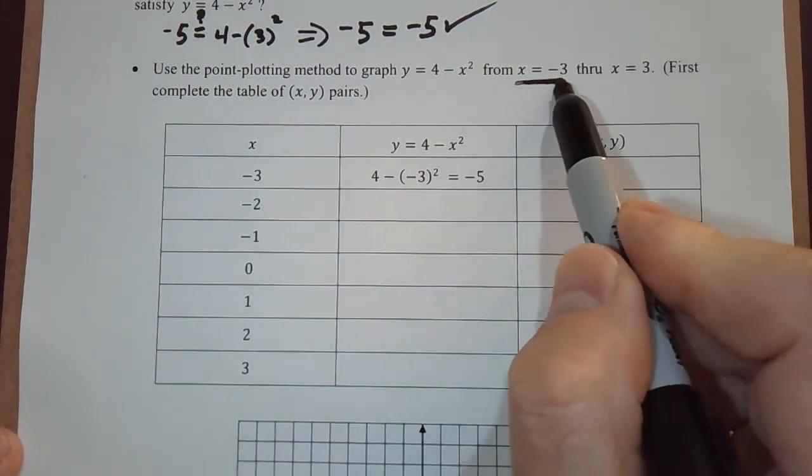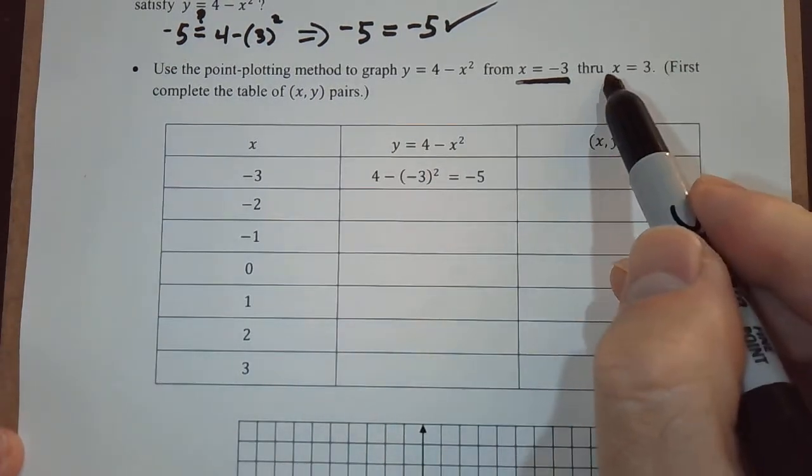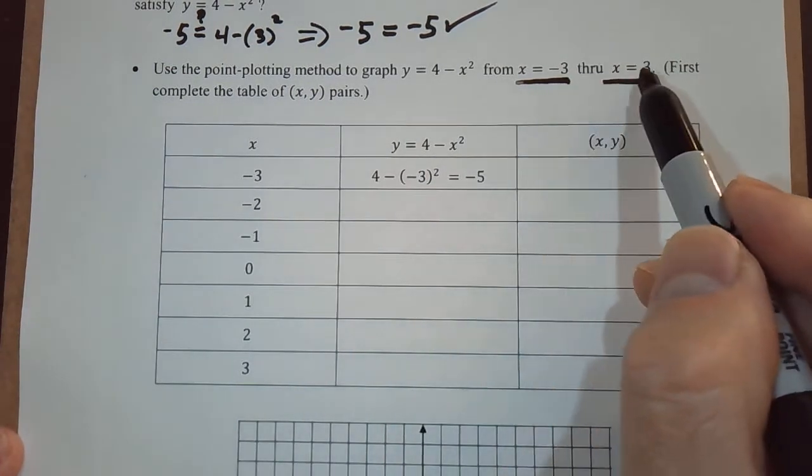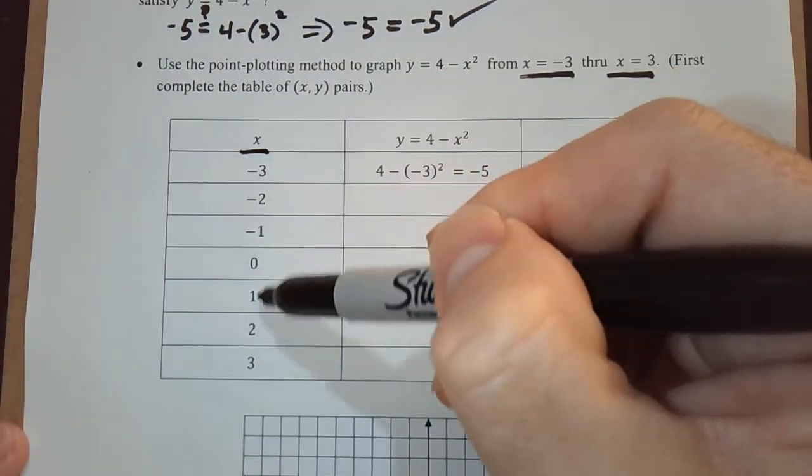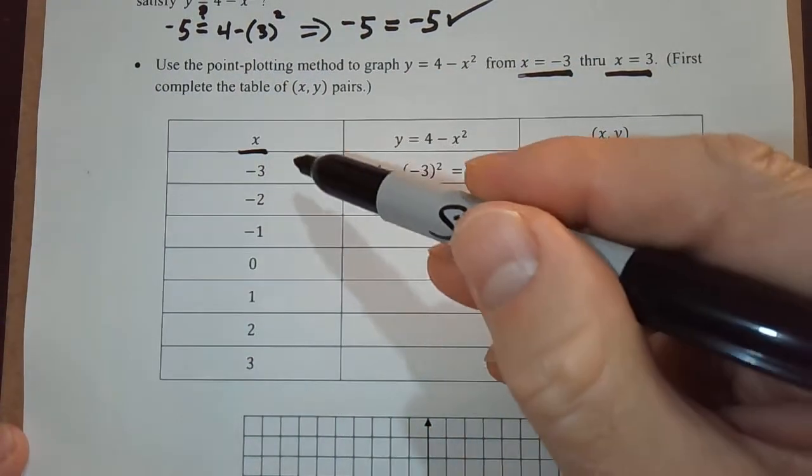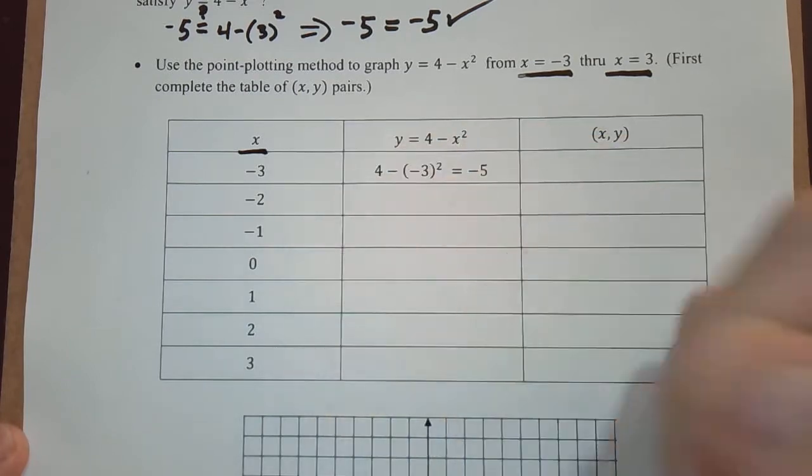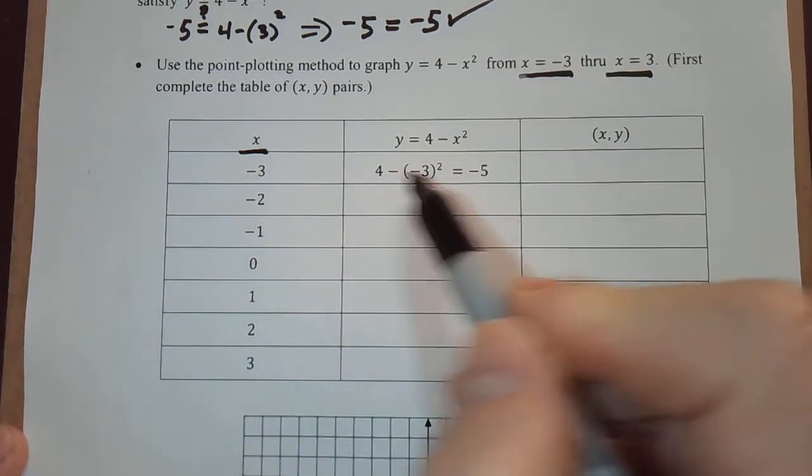I did the first one for us. We're choosing the points, the integer values, from x equals negative 3 to x equals positive 3, so I made a table of those values here. I want to get the corresponding y value to each one of these numbers, and I did the first one for us.